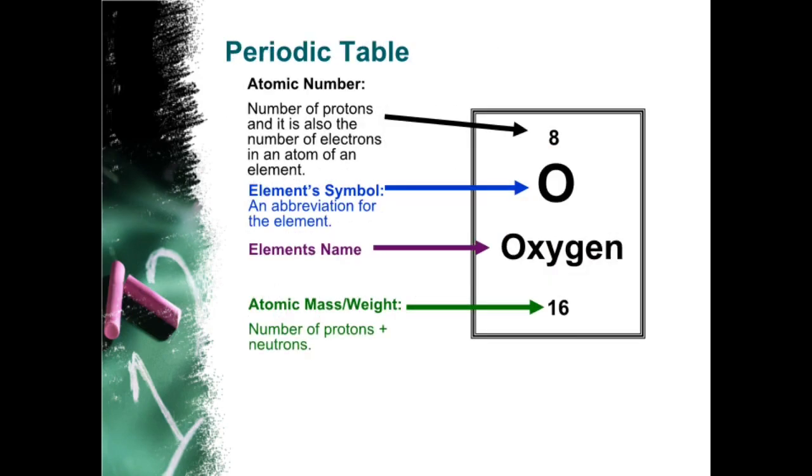Periodic table. The atomic number is the number of protons and it is also the number of electrons in an atom of an element. Elements symbol is an abbreviation for the element. The element's name is oxygen. To compute the atomic mass or atomic weight, just add number of protons and number of neutrons.